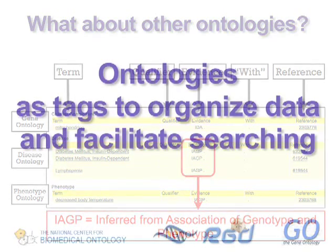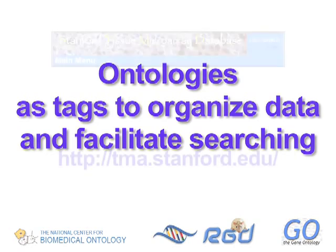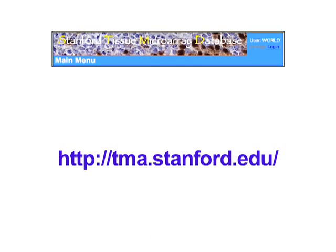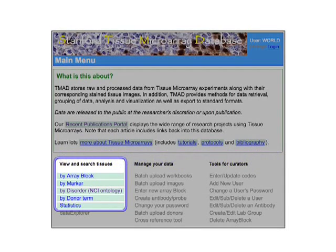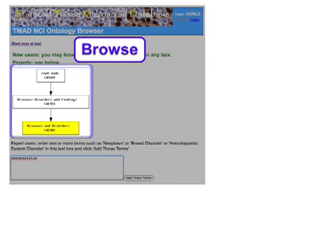So far, we've talked about cases in which the annotations include more components than just the term. There are cases, however, where ontology terms are used primarily as tags to organize data and facilitate searching. For instance, the Stanford Tissue Microarray Database uses the NCI Thesaurus to tag images of tissue arrays. To find relevant image data, users can either browse a diagram of the ontology tree to find terms linked to the samples they're interested in,